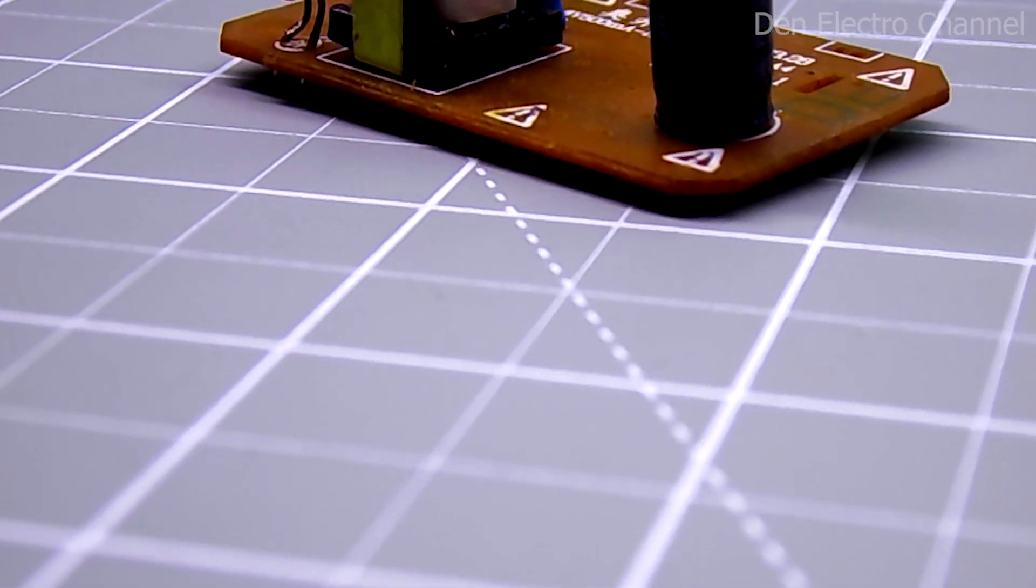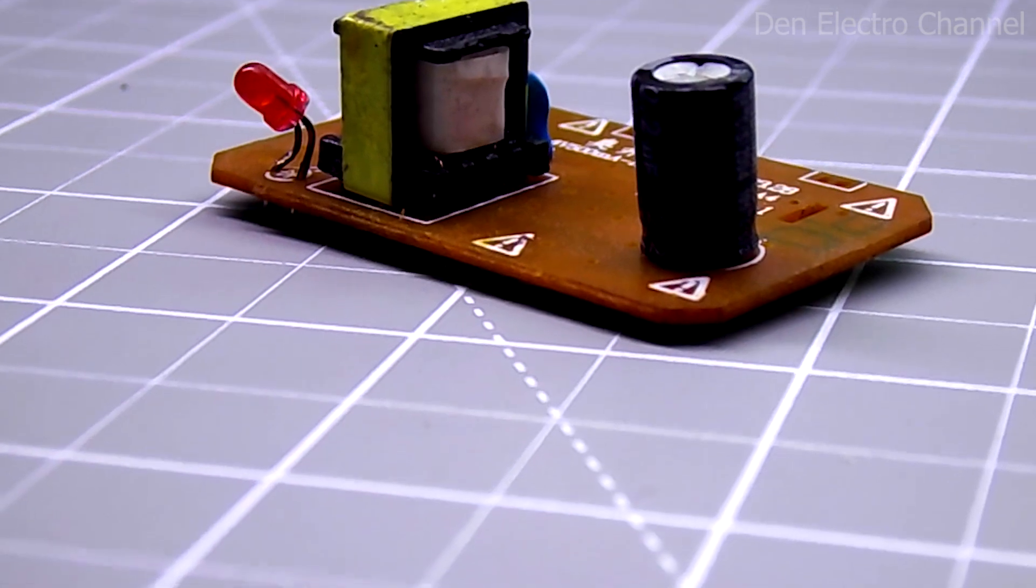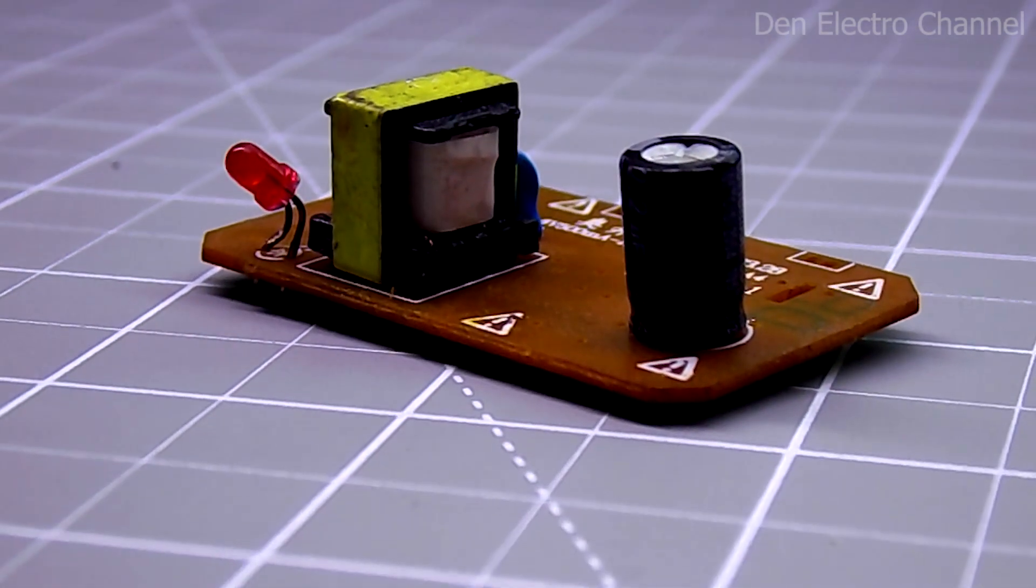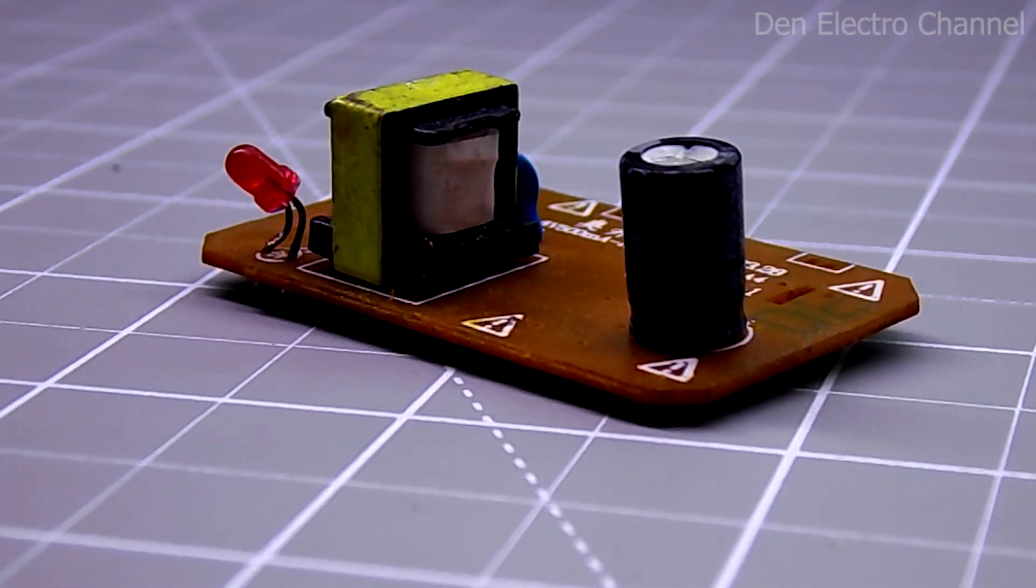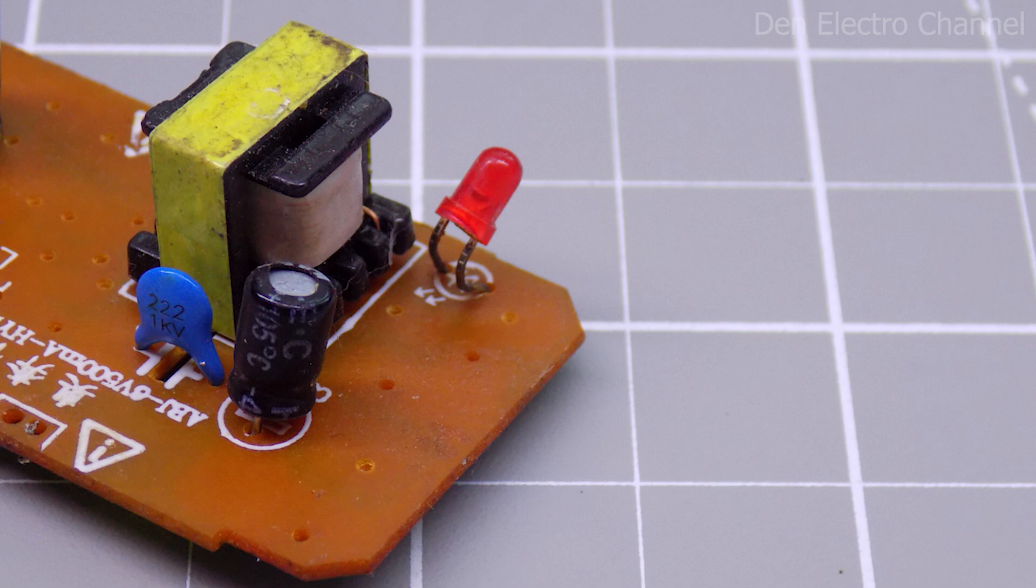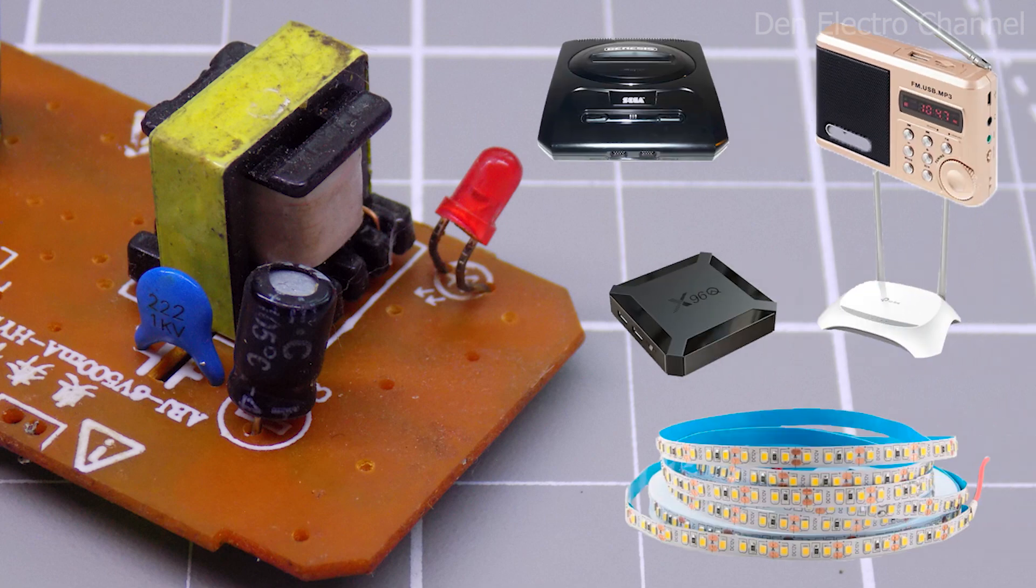Today I will show you how to change the output voltage of a low power power supply. Almost any voltage can be obtained. After this, you can connect the load you need to it. Naturally, provided that it can handle it.